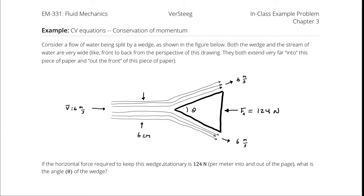Consider a flow of water being split by a wedge as shown in the figure below. Both the wedge and the stream of water are very wide — that is, they extend very far into and out of the screen — which means that we are treating it as a two-dimensional problem. If the horizontal force required to keep this wedge stationary is 124 newtons per meter into and out of the page, what is the angle of the wedge?